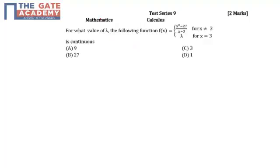So what we will do is, if the function is continuous at x equal to 3, then we have limit as x tends to 3 of f(x) equals f(3). This is limit as x tends to 3 of x cubed minus 27 divided by x minus 3, which should be equal to lambda.